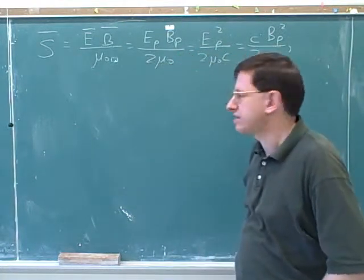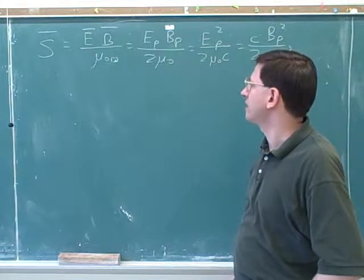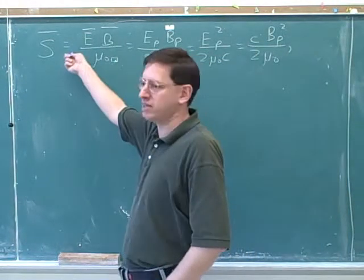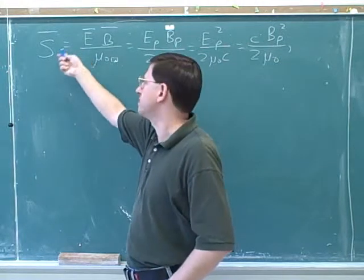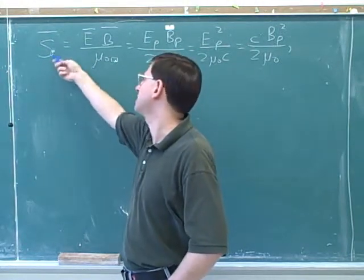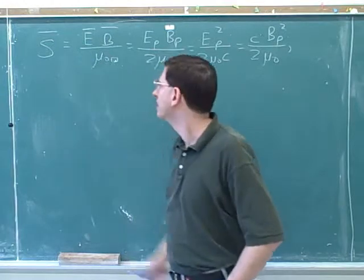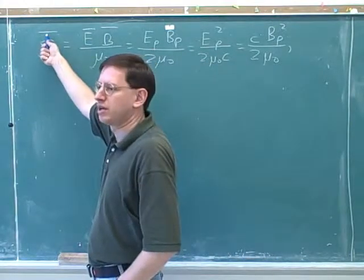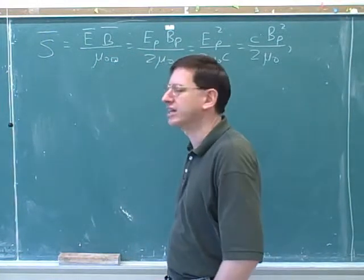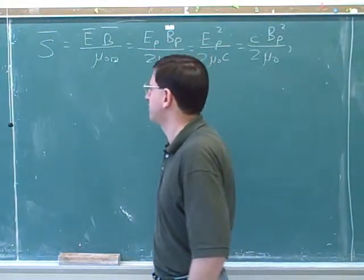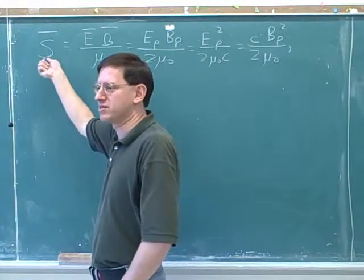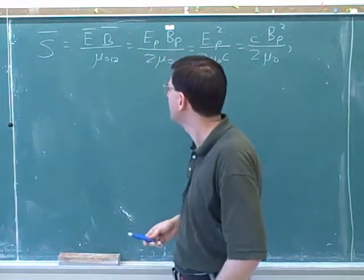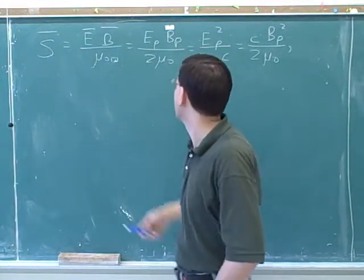We showed a little bit how intensity relates to fields. This is the Poynting vector equation right here — the Poynting vector idea that S equals E times B over mu zero. The bar here stands for average. I've shifted back to S for intensity because the book uses S, but we could use I for intensity either way. S or I for intensity. This is basically the Poynting vector we went over last time.